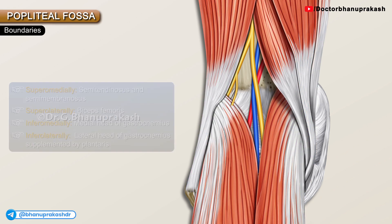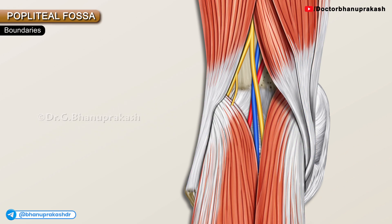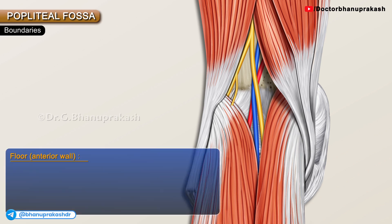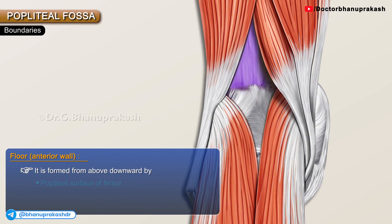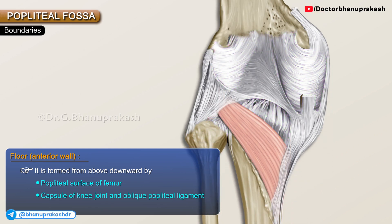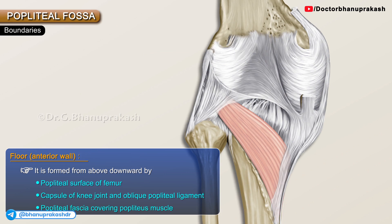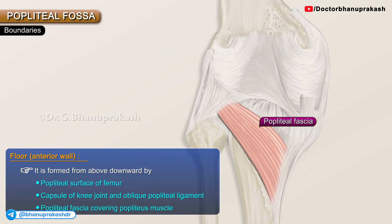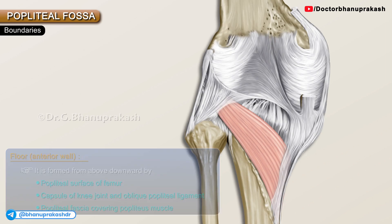The anterior wall or floor of the popliteal fossa is formed by structures from above downwards: the popliteal surface of the femur, the capsule of the knee joint, the oblique popliteal ligament, and finally the popliteal fascia covering the popliteus muscle.